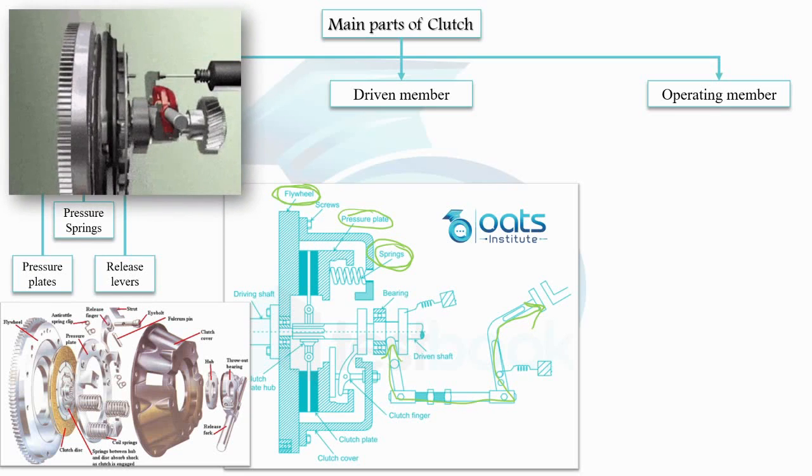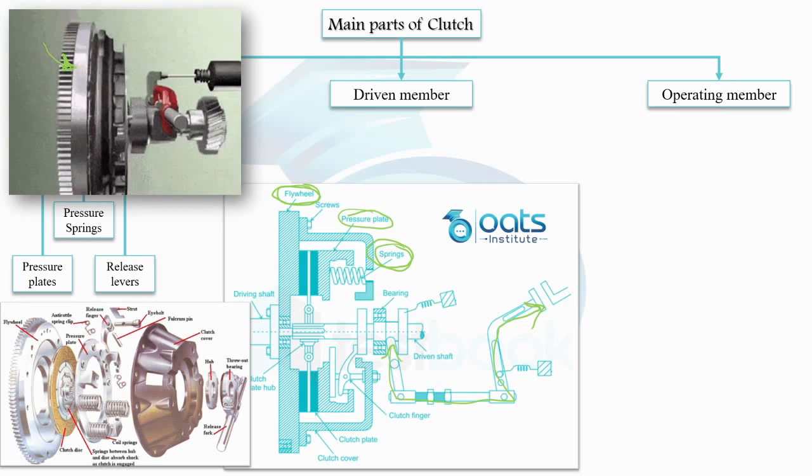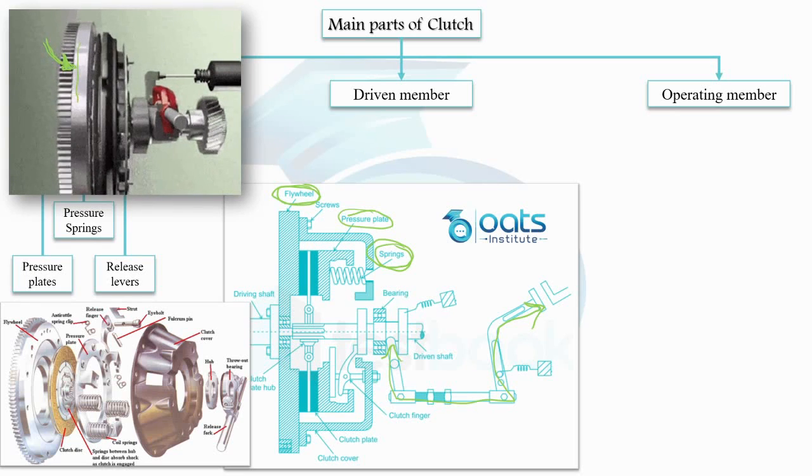As we can see in this animated video, the flywheel, which is essentially mounted on the engine's crankshaft, rotates together as a unified unit. To ensure efficient operations, openings are strategically placed in the clutch housing and cover, allowing the dissipation of heat generated during its functioning.